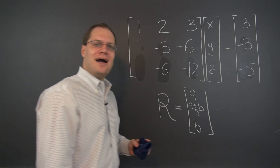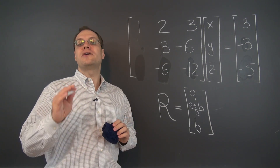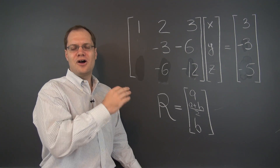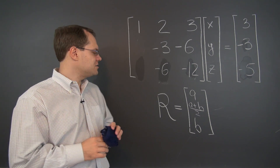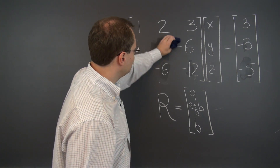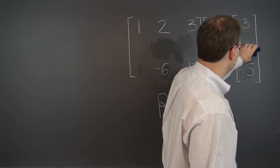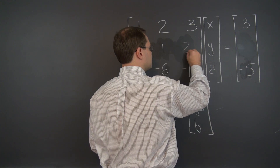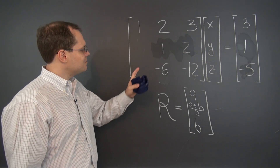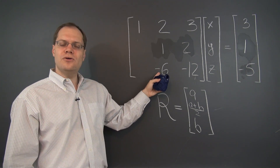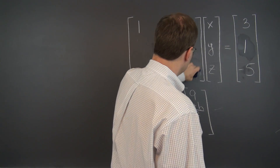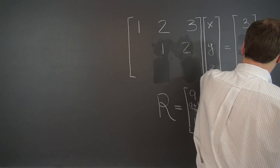So far nothing bad has happened. You can verify that all of the relationships in the original system are still preserved — that's the property of Gaussian elimination. Now let's divide the second row by negative 3, giving us 1, 2, and 1, with 1 on the right-hand side. Still so far, so good. The next step is adding 6 of the second row to the third, giving us 0, 0, and 1 in that row.